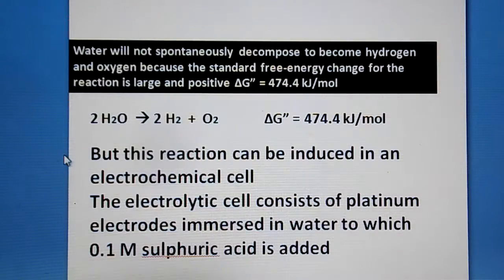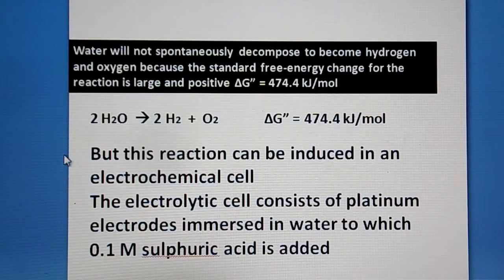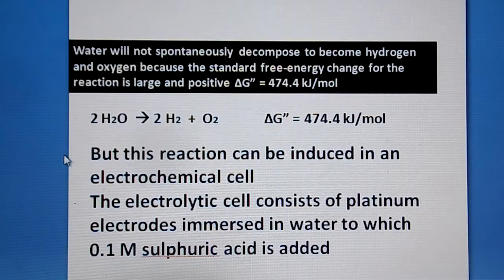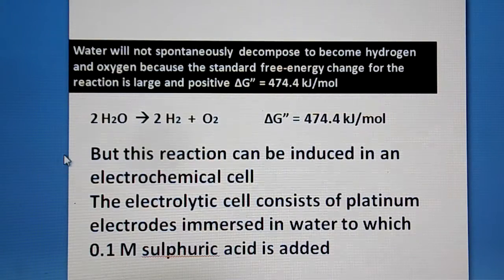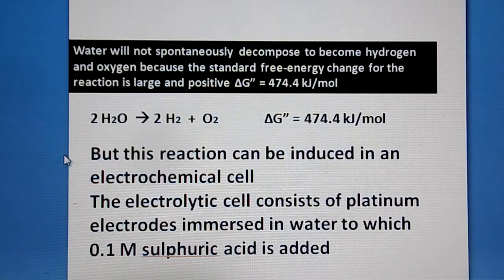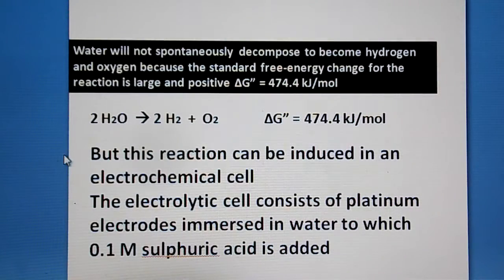The reaction shows that water (2H₂O) decomposes into hydrogen and oxygen. When two molecules of water decompose, we get two molecules of hydrogen and one molecule of oxygen. This reaction is represented by a positive ΔG°, of the order of +474.4 kilojoules per mole, but it can be induced in an electrochemical cell.